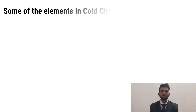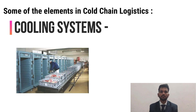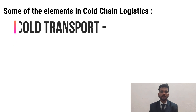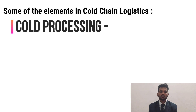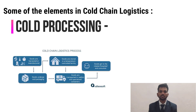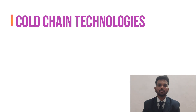Some of the elements in cold chain logistics include: cold storage facilities that store goods waiting to be transported; cold systems that bring food up to and keep it at an appropriate temperature during all aspects of the supply chain, including processing, storing, and transporting; cold transport to ensure goods remain at stable temperature and humidity levels; cold processing facilities for processing goods with sanitation in mind; and cold distribution, which deals with loading boxes, crates, and pallets to distribute goods.